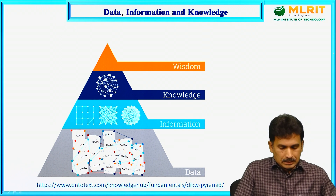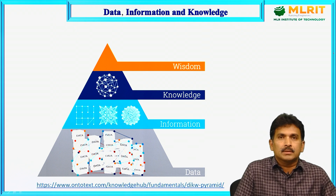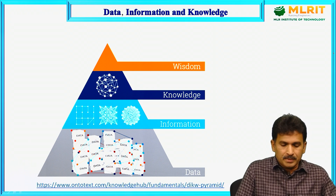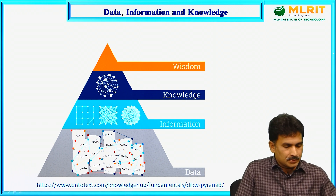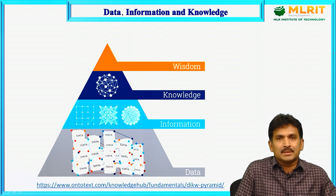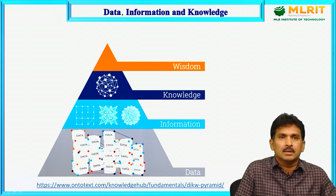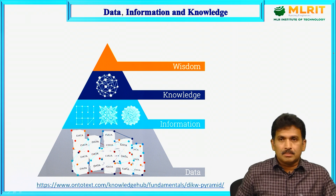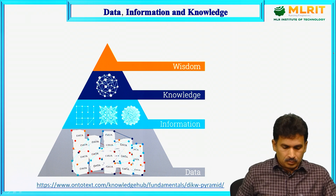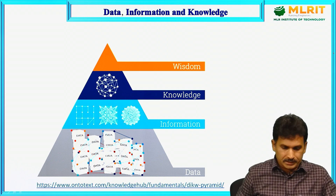If you look at this data, information, knowledge, wisdom pyramid, these terms — data, information and knowledge — are often used interchangeably. However, these terms represent different stages of value creation, that is from data to decision making. Let us see one by one to get much clarity of what is data, what is information and knowledge, and then wisdom.